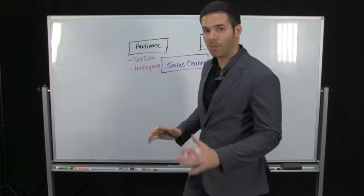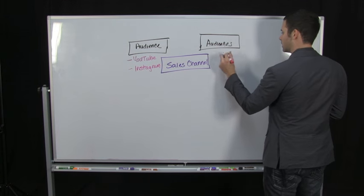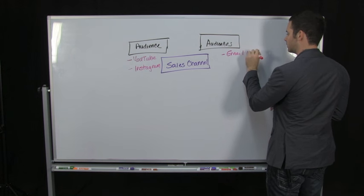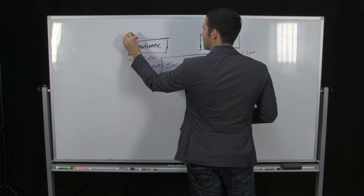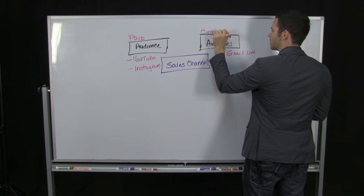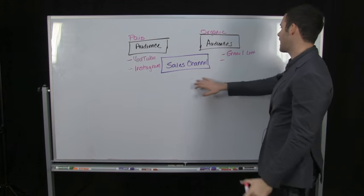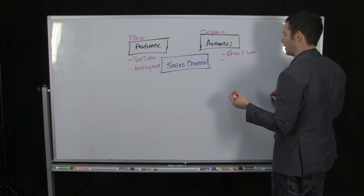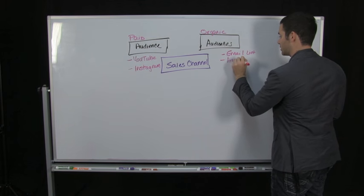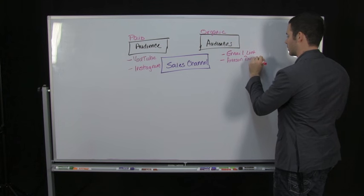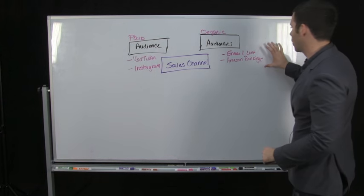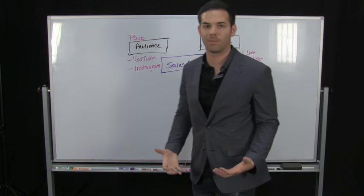Now the other way is to build up our own audience. So this would be something like an email list. I guess we say this is paid and this is organic and we can actually mesh the two. So we could pay to build the email list. We could pay to build up, this might be Amazon rankings and reviews. And this is going to be where we have the control long term, obviously.